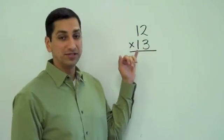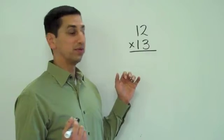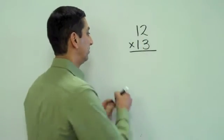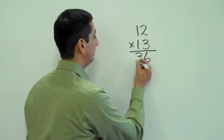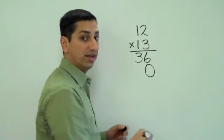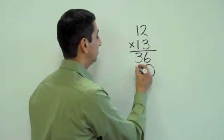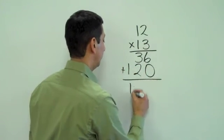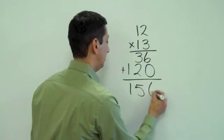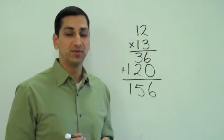If you remember how to do this in a traditional way, the way most of us learned it when we were in school, you do 2 times 3 is 6, 3 times 1 is 3. You put your placeholder 0 there, and then you do 1 times 2 is 2, 1 times 1 is 1. You add them together, and hopefully you get the right answer, 156.